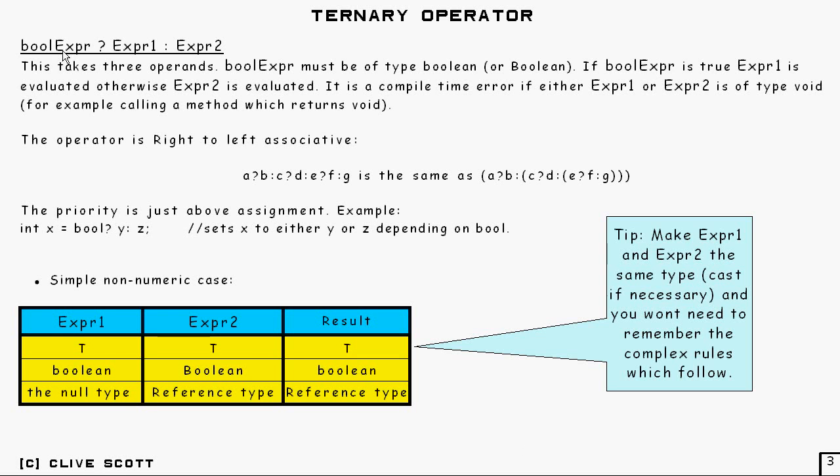Well, in simple terms this is what the ternary operator is. It's got three operands. That's why it's called ternary. And this first operand here, this boolean expression must be of type boolean or its wrapper class. And if the boolean expression is true, then expression one is evaluated. Otherwise expression two is evaluated.